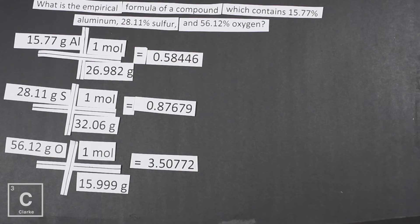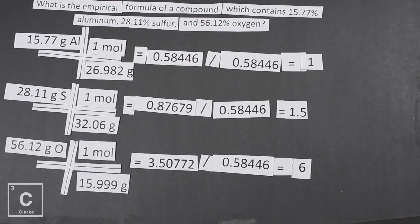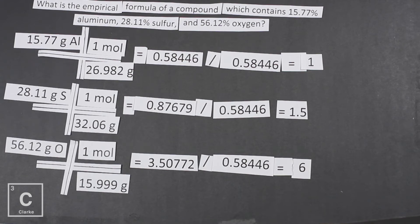Percent to mass, mass to mole — now we're ready to divide by small. We compare the three answers and the smallest is 0.58446, so we divide each by that. When we divide by small, this is where we can round, but only if it's almost a whole number — only 0.0 or 0.1, or 0.8 or 0.9. Nothing in between: no 0.2, 0.3, 0.4, 0.5, 0.6, 0.7. Again we get a 1.5, so we are going to have to multiply till whole. We divided by small and did not get whole numbers.